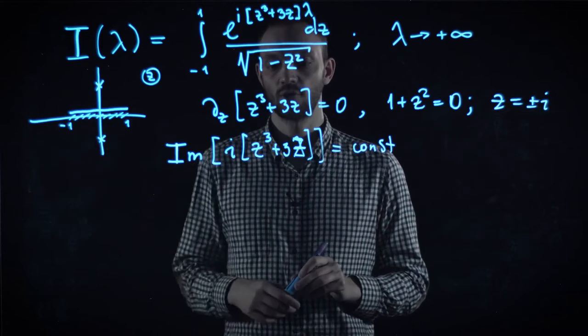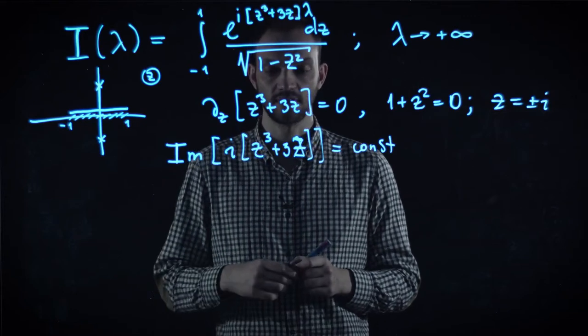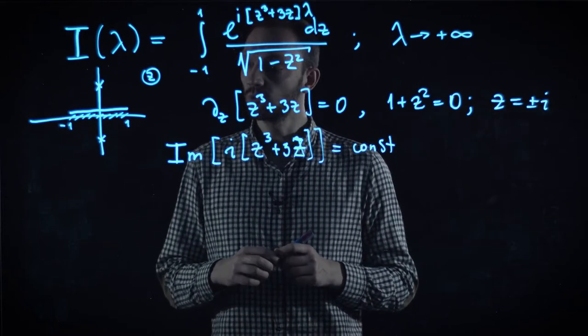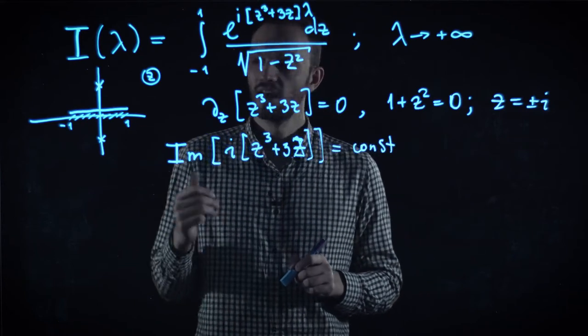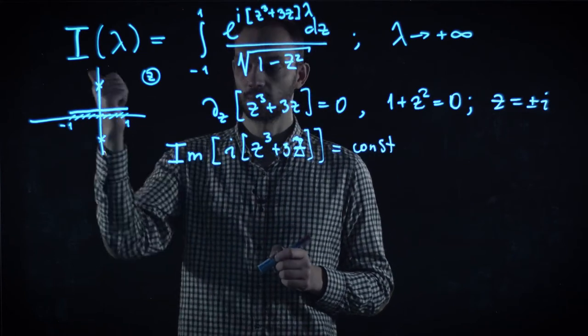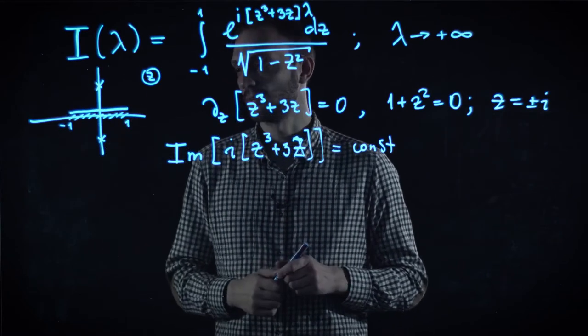It defines a set of lines in the complex plane, which are called constant phase lines. And now we need to understand which of these lines pass through, first of all, saddle points. And second, through boundary points of our integration domain.